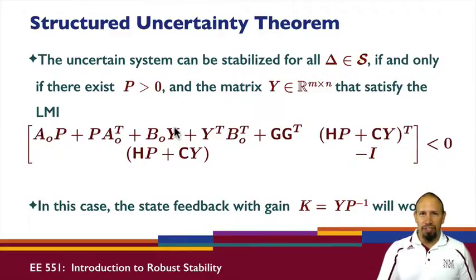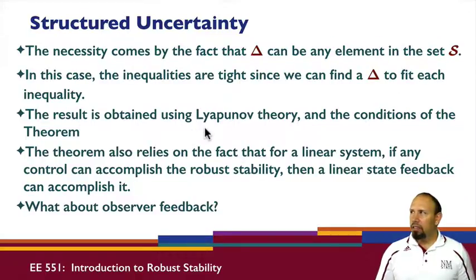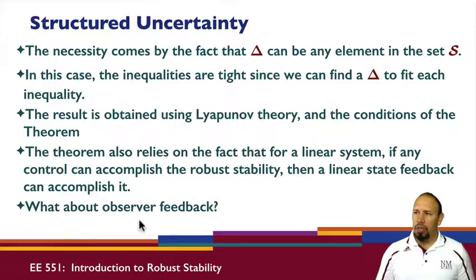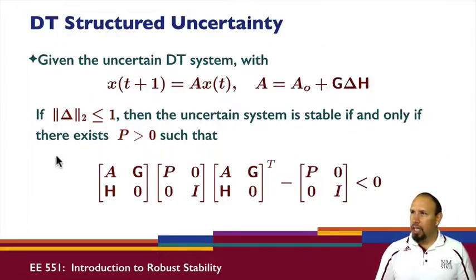The proof is given in the proofs video. The necessity comes from the fact that delta can be any element in set S, and the inequalities are tight since we can always find a delta that fits. The result uses Lyapunov theory, and also relies on the fact that for a linear system, if any control can accomplish robust stability, linear state feedback can accomplish it. An important side question is about observer feedback — you can find more about this in EE555.